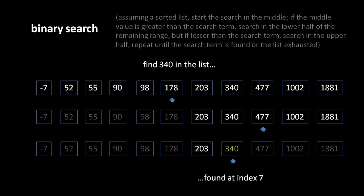In the subrange that remains, we jump to the middle, compare against 340, and see that it is greater than 340, so the value must occur earlier than this index. One last time, we jump to the middle of the remaining range. In this case, the range has an even number of elements, so there's no precise middle — we either round down or round up. Here we're rounding up, and it turns out we've landed on the value we're searching for. The algorithm returns the index, which in this case is 7. One way to think about this algorithm is that we are effectively shrinking the range in which we are searching.